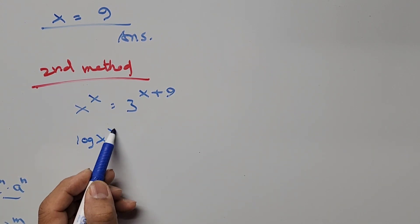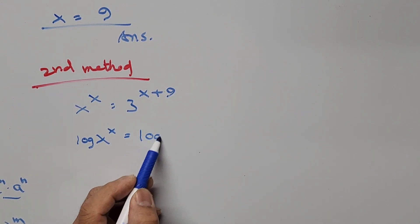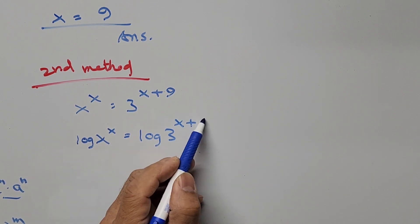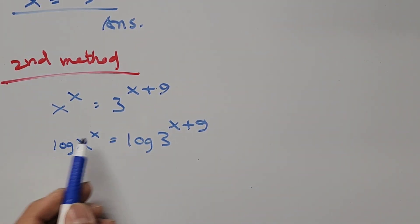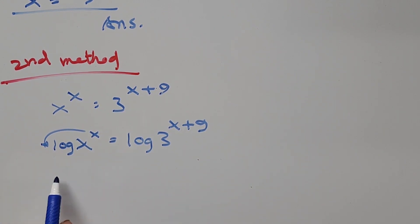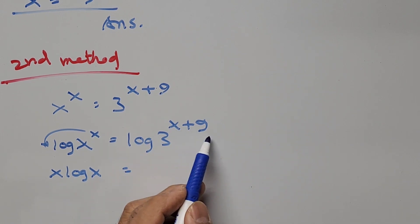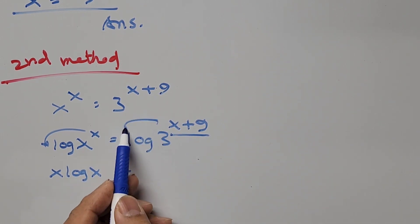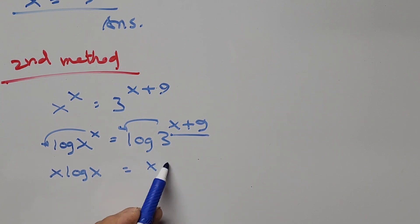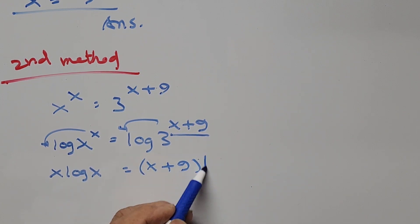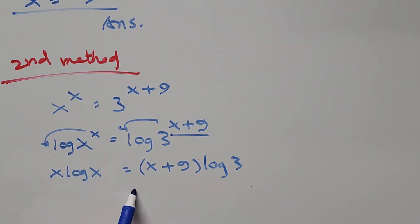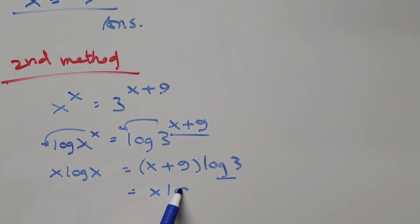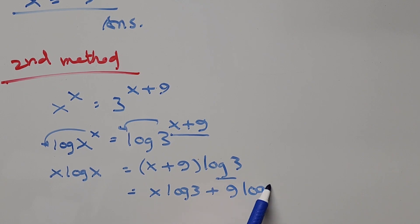So we have log of x to the power of x equals log of 3 to the power of x plus 9. Bringing down the exponent x as a coefficient, we get x times log x equals (x plus 9) times log 3. Distributing log 3 on the right-hand side gives x log 3 plus 9 log 3.